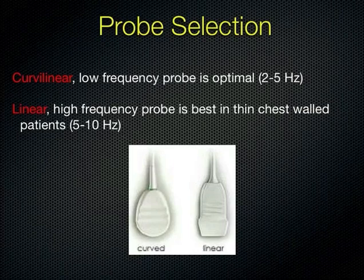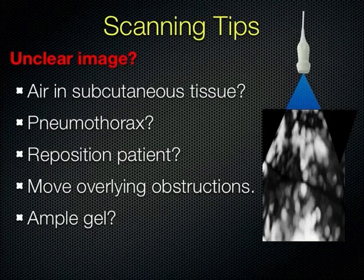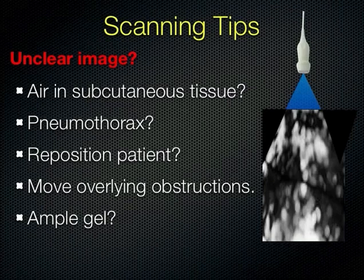A couple of quick tips for any imaging: if you don't have a great picture, you need to troubleshoot. Do you have enough gel? Air is your enemy, gel is your friend. If you don't have good contact with the chest wall, or something is obstructing — a bandage, a bra strap — clear those obstacles. You may need to reposition the patient. Also consider whether the reason you can't see anything is air in the tissues or a pneumothorax obliterating your image, which itself tells you something.